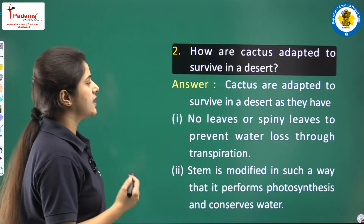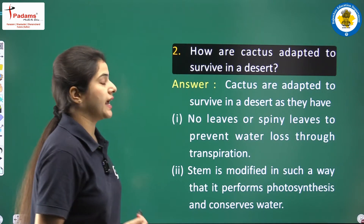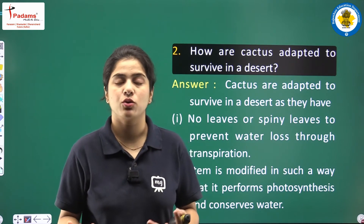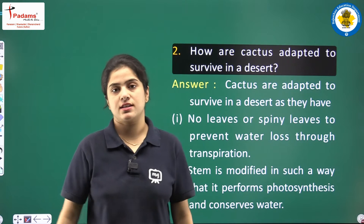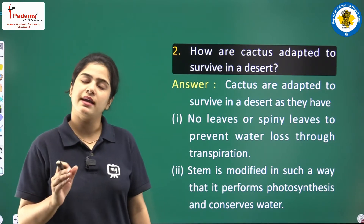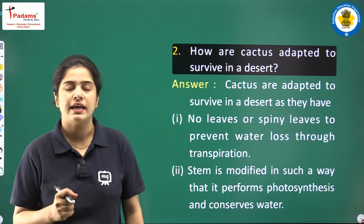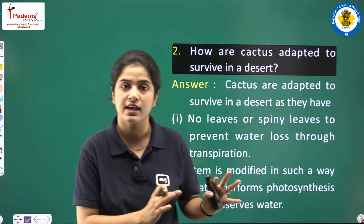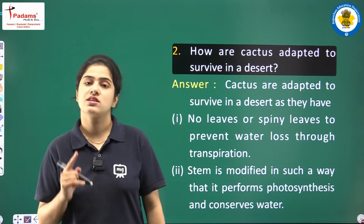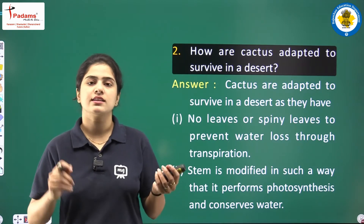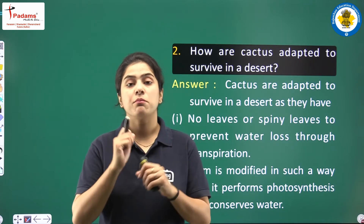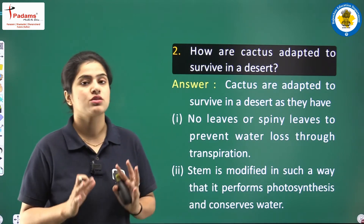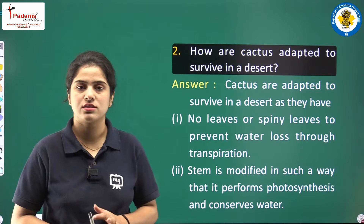Looking at the second question: how are cactus adapted to survive in a desert? The first thing about cactus leaves — they are made in such a way that there is no loss of water in the transpiration process. In our last-to-last class, there was an activity in which we had taken a cactus plant and a normal plant, covered with a polythene bag. We observed that the cactus plant had very low water loss in the environment.